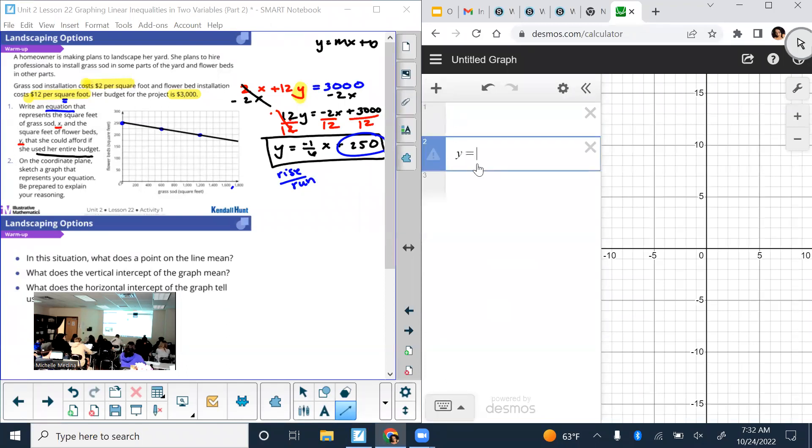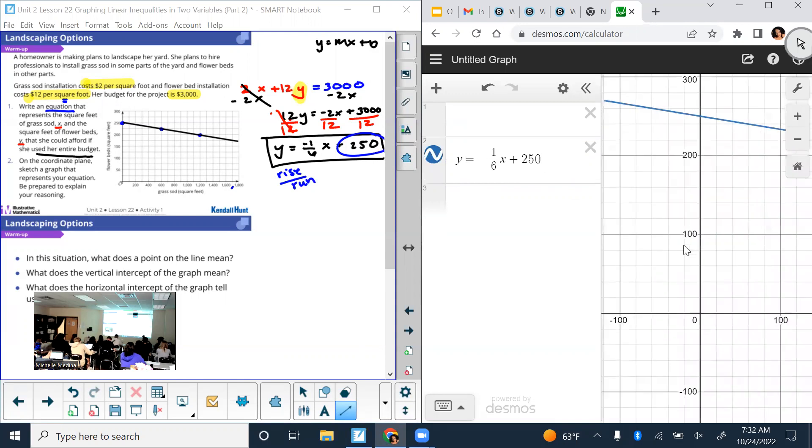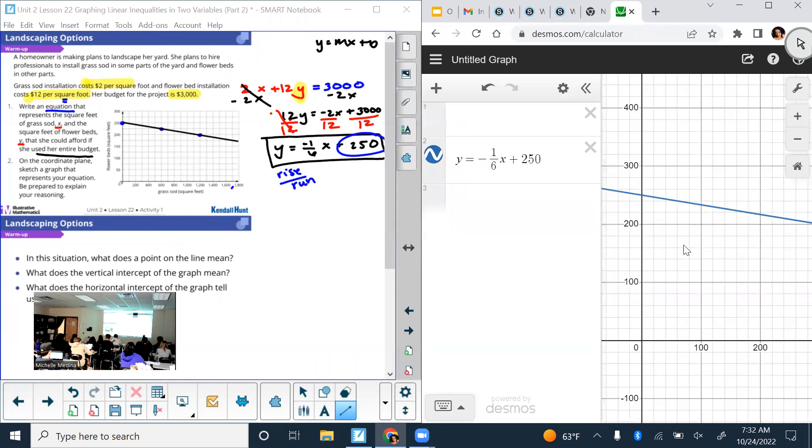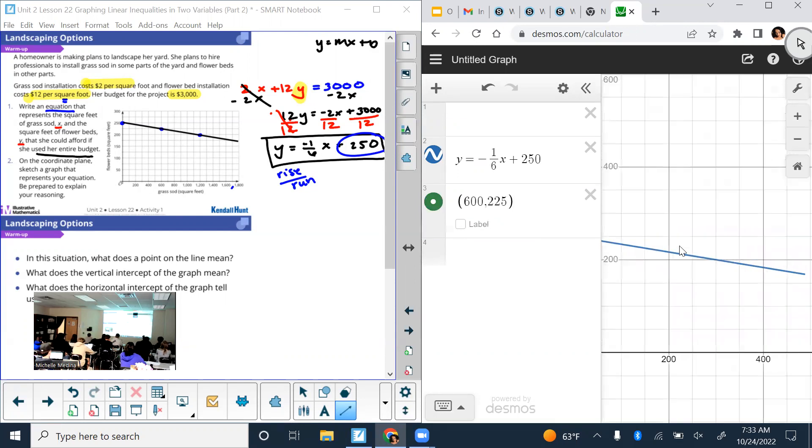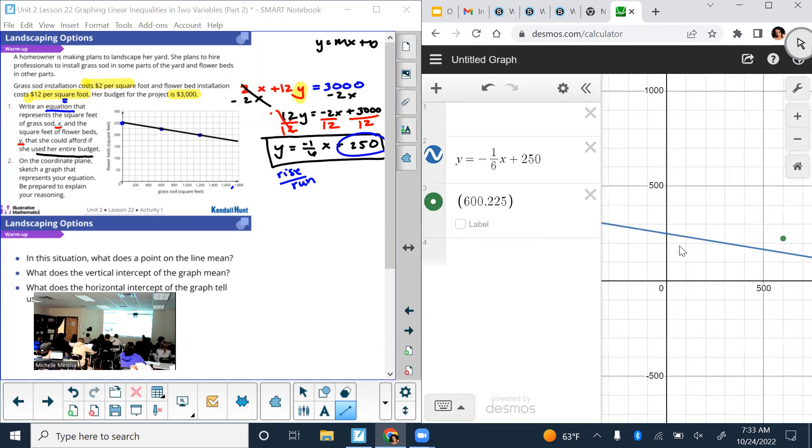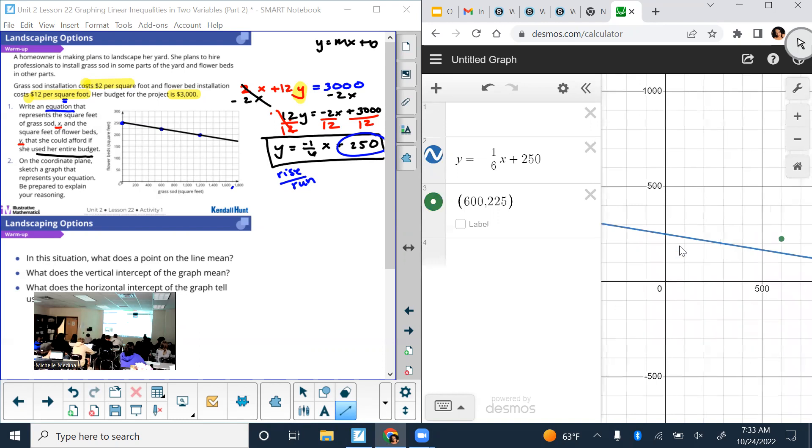So y equals negative one-sixth. Whoever's talking, please stop. Okay, so here's my graph. Looks pretty similar. Let's see. So this one has a point on 600, 225. Let's see if that falls on our line. Oh, nope. So that's why I always double check.